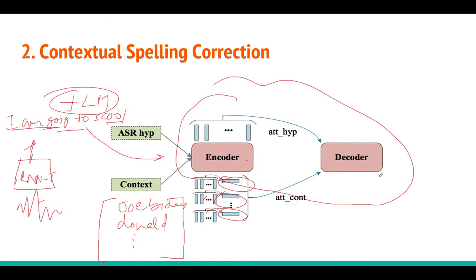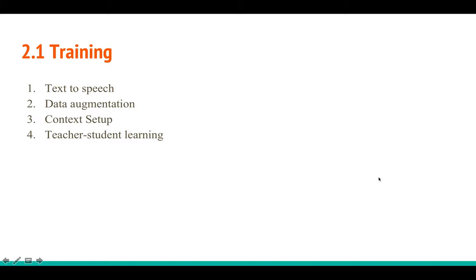That is the whole idea of the contextual spelling correction model. We will also see some tricks used during inference, and training tricks including augmentation. You need data to train this model, and it's difficult to get contextual data. This paper uses a clever trick to synthesize data using a text-to-speech engine. The training section is explained in four parts: text-to-speech, data augmentation, contextual setup, and teacher-student learning.